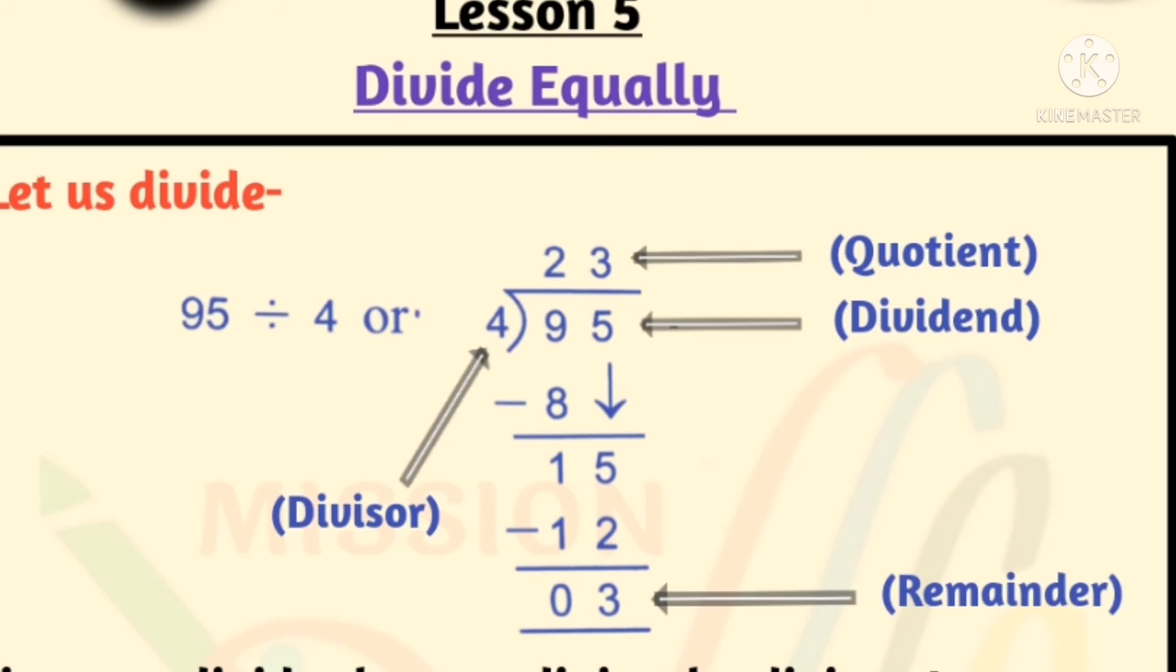Quotient is 2 tens and 3 ones, which equals 23. Remainder is 3. Students, the number which divides is called divisor. The number to be divided is called dividend. The number or share of each is called quotient. The number left after division is called remainder.